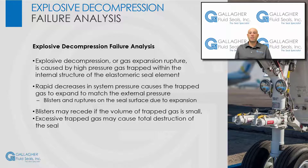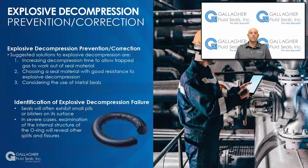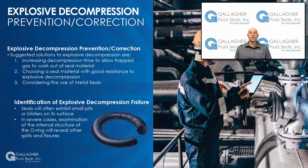If the volume of trapped gas is small, the blisters may recede as the pressure is equalized with little effect on seal integrity. Excessive trapped gas may cause destruction of the seal. To prevent or correct explosive decompression, the following solutions are recommended: increasing decompression time to allow trapped gas to work out of the seal material, choosing a seal material with good resistance to explosive decompression, and if the problem persists after trying those two steps, consider using metal seals. The seal subjected to explosive decompression will often exhibit small pits or blisters on its surface, and in severe cases, examination of the internal structure of the O-ring will reveal other splits and fissures.